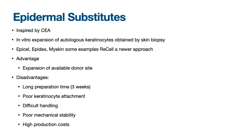Epidermal substitutes are inspired by cultured epidermal autografts and rely on in vitro expansion of autologous keratinocytes obtained by skin biopsy. Examples include Epicel, Epidex, MySkin, and the newer ReCell. The advantages are that they can expand available donor site and are important in massive burns where little donor site is available. The disadvantages are lengthy: long preparation time of about three weeks, poor keratinocyte attachment, very difficult to handle, poor mechanical stability due to lack of any dermal component, poor resistance to infection, and higher production costs.